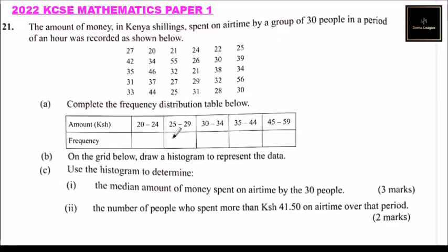This is the 2022 KCAC Mathematics Paper 1, Question 21. We are told the amount of money in Kenyan shillings spent on airtime by a group of 30 people in a period of an hour was recorded as follows — so we have data like 27, 20, 21, and so on.